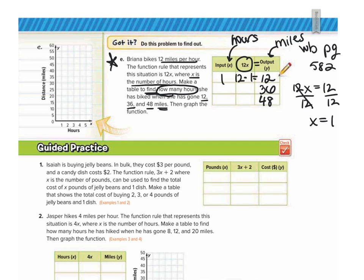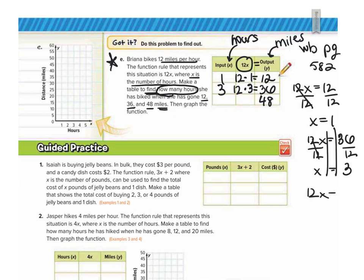Next output is 36: 12x equals 36. Divide both sides by 12, giving x equals 3. So our next input is 3; 12 times 3 is 36. Last output is 48: 12x equals 48. Divide by 12: x equals 4. So 12 times 4 equals 48.